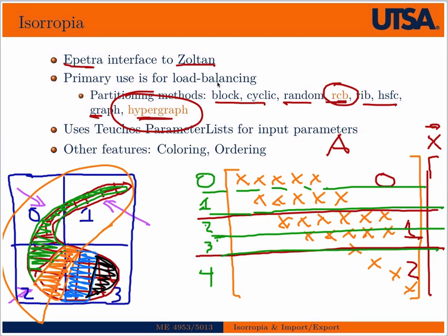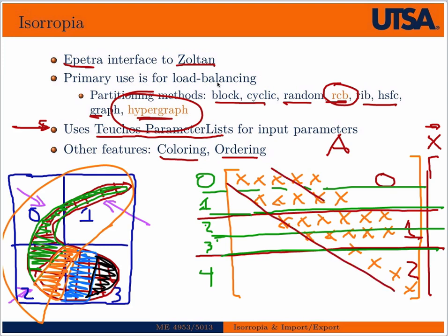Isoropia takes in some inputs that specify which type of load balancing scheme you want to use, and they're specified as Teuchos parameter lists. Isoropia also has other features: coloring — when we talked about Petra graphs, we talked briefly about what graph coloring is — and then ordering as well. Ordering would be a way to precondition a matrix such that it has a tight banded structure by reordering the nodes, allowing your iterative solvers to work more efficiently.